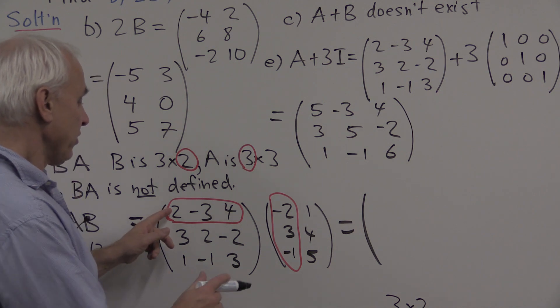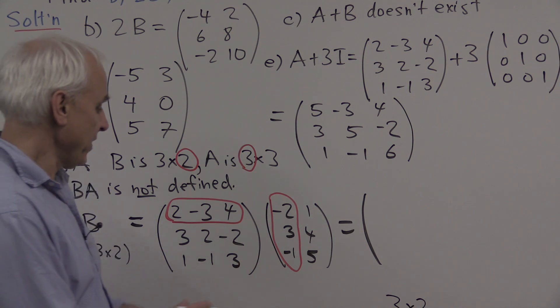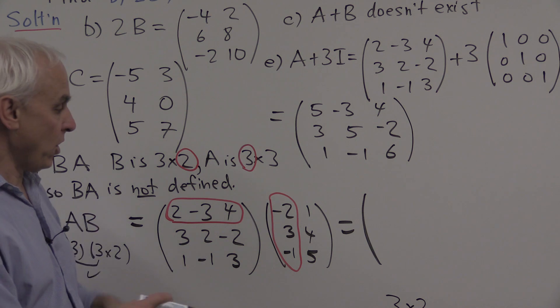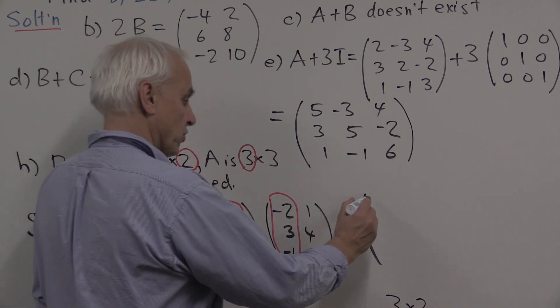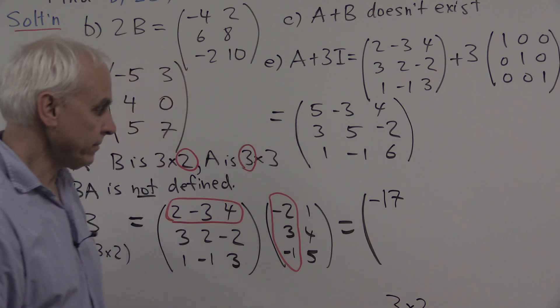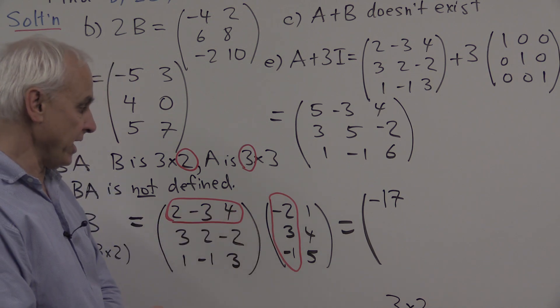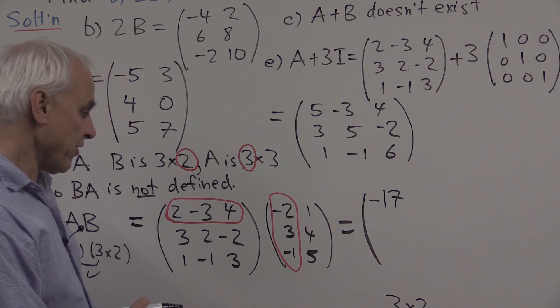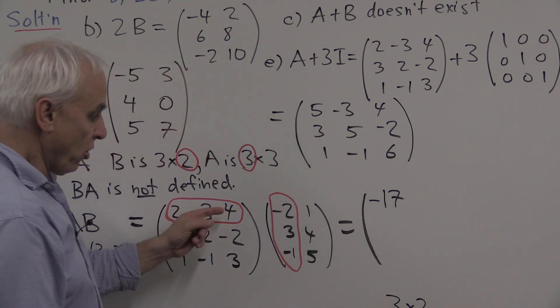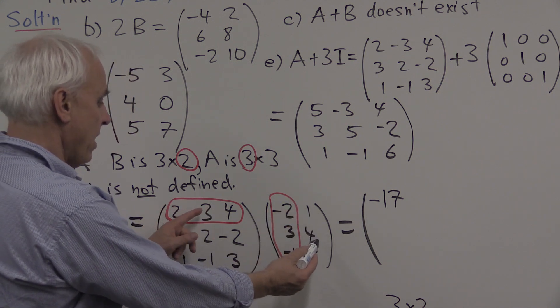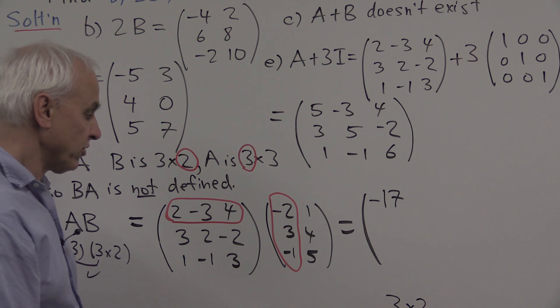So that would be for example, here 2 times minus 2 is minus 4. Then plus minus 3 times 3, that's minus 9. And then plus 4 times minus 1, that's minus 4. All together, we get minus 4, minus 9, minus 4 for a total of minus 17. That goes in the 1-1 entry because it's the first row and the first column of the various possible products we could take. Now let me carry on with the other multiplications. We're always taking rows here and columns here. So I'm going to move over to this next one here, which will be the same row times the second column. 2 minus 12 plus 20. 2 minus 12 plus 20, that's like 22 minus 12, that's 10.